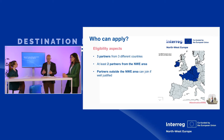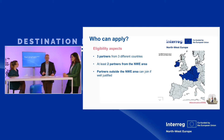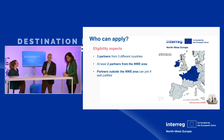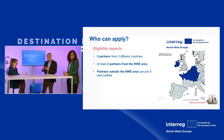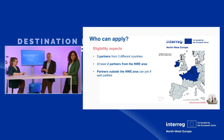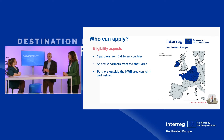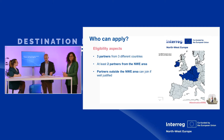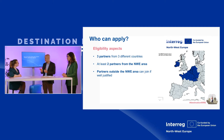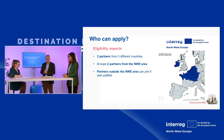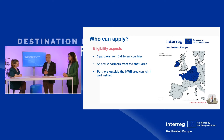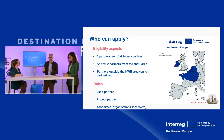The second point is that at least two of the three partners must be from the Northwest Europe area — that means Ireland, Netherlands, Belgium, Luxembourg, Switzerland, or the concerned parts of Germany and France. Partners outside the NWE area can join if well justified, meaning if the competences being sought cannot be found within the Northwest Europe area.